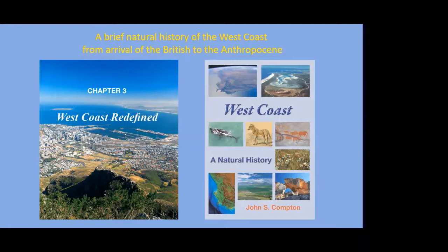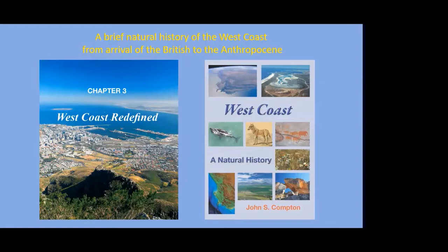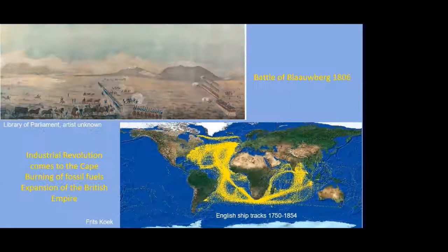For today, I want to give you a sense of the history of the West Coast from the British arrival through to what we call the Anthropocene — you may have heard that term; it's become quite popular in the press and basically means 'human epoch.' It's the focus of the third chapter in my latest book, The West Coast Natural History. The book is in three parts: the first covers the physical environment, the second the living landscape, and the third — which is today's topic — is called 'West Coast Redefined,' looking at how human activity has transformed much of the West Coast.